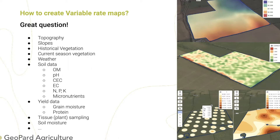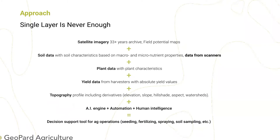There is no simple answer to this question, but we can help. Our approach at Geopard is that we aggregate all possible remote sensing data, data from scanners, data from machinery, and topography data. We apply artificial intelligence and machine learning models, and we create an engine which allows you to adjust these models using your own agronomic logic.